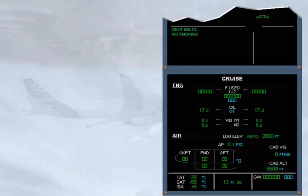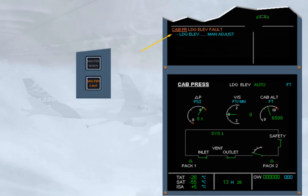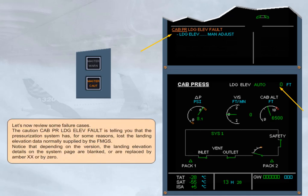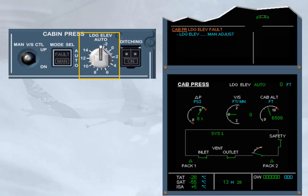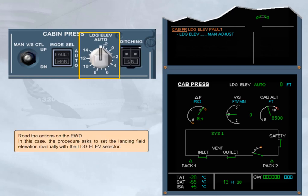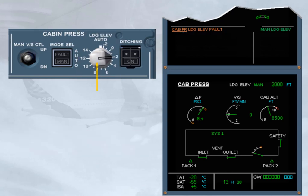Let's review some failure cases. The caution 'cabin pressure landing elevation fault' indicates that the pressurization system has, for some reason, lost the landing elevation data normally supplied by the FMGS. Depending on the version, the landing elevation details on the system page are blanked, replaced by amber crosses, or by zero. The procedure asks to set the landing field elevation manually with the landing elevation selector. As soon as the selector is moved from the auto position, the action line on the engine warning display clears, and a manual message appears on the cabin pressure page with the selected landing elevation value indicated.